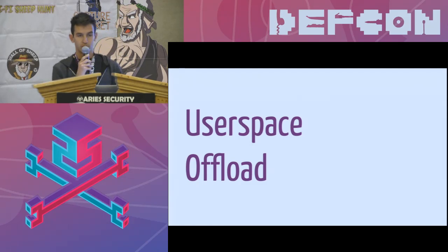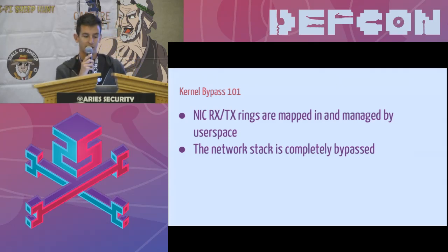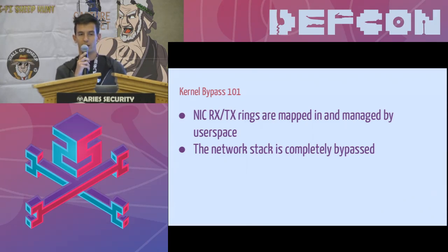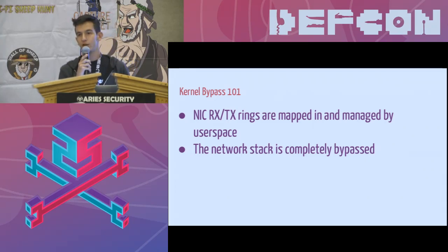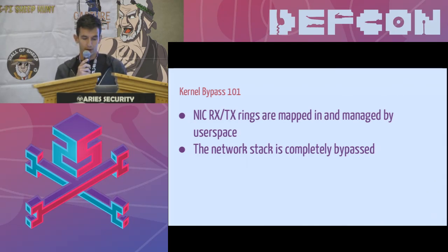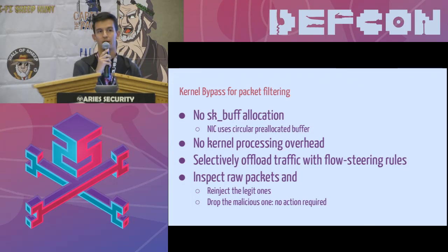We should move to our current solution, which is based on user space offload — offloading into user space the task of dropping packets. User space offload is based on a technique called kernel bypass. Kernel bypass means taking some of the network card receive and transmission rings, mapping them in user space, and allowing a user space program to deal with them. Basically, the network card is partially detached from the Linux network stack, and a user space program can take control of that — it can write packets from there and read packets from there. One reason this technique is used is to implement user space network stacks, because a user space program can just read and write packets from the NIC directly without having to deal with the kernel.